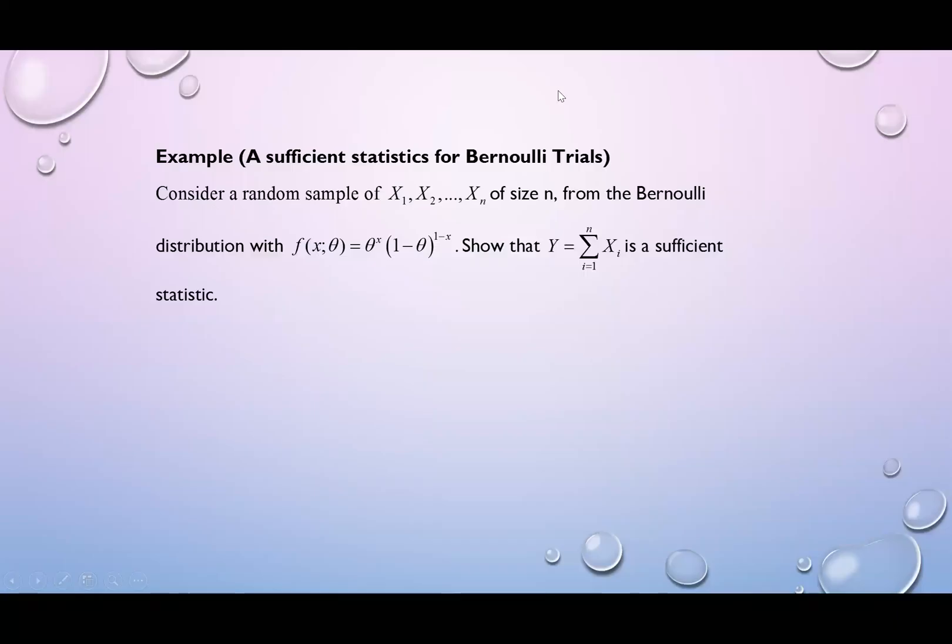Let us refer to example for Bernoulli trial. Considering the sample of X1, X2, Xn of size n from the Bernoulli distribution, we have the probability function theta to the power x, 1 minus theta to the power 1 minus x. We want to show that T is equal to summation Xi is a sufficient statistic. In this case, you can replace showing that T equals to summation Xi is a sufficient statistic.